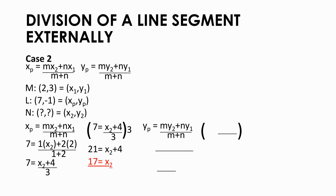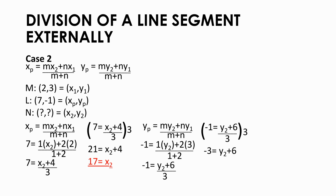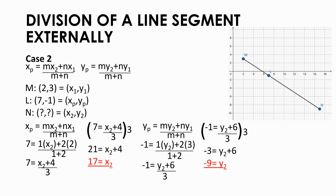Next is the y-coordinate. Substitute: y sub p is negative 1, m is 1, y sub 2 is still unknown, n is 2, y sub 1 is 3, and m plus n is 1 plus 2. Simplify to get negative 1 equals y sub 2 plus 6, all over 3. Multiply both sides by 3: negative 3 equals y sub 2 plus 6. Add negative 6 to both sides: y sub 2 equals negative 9. After identifying x sub 2 and y sub 2, plot (17, negative 9). And we are done.